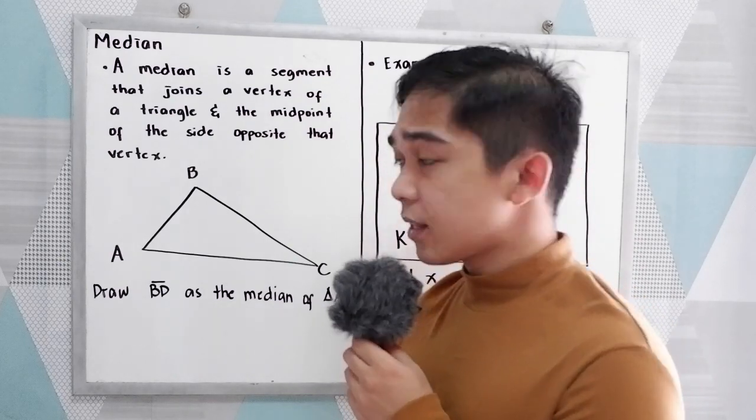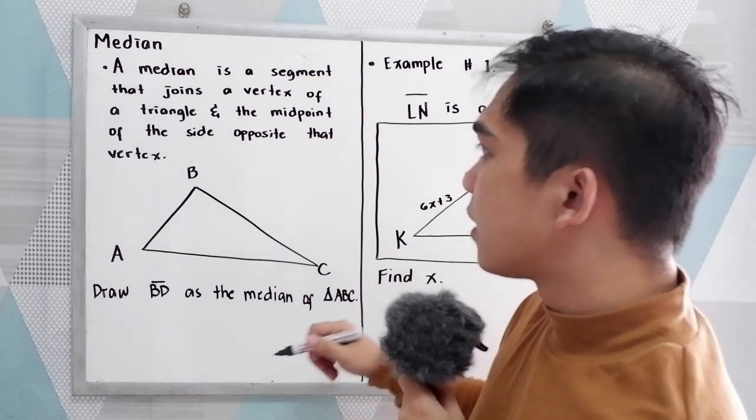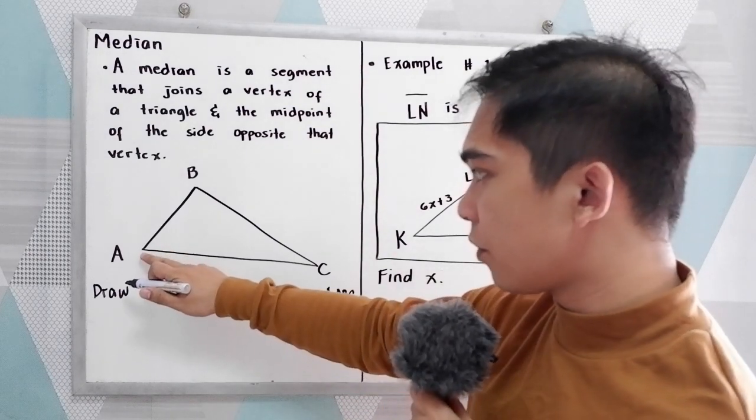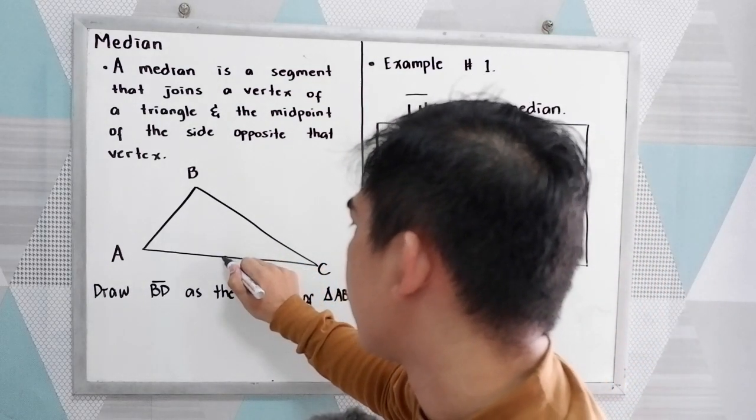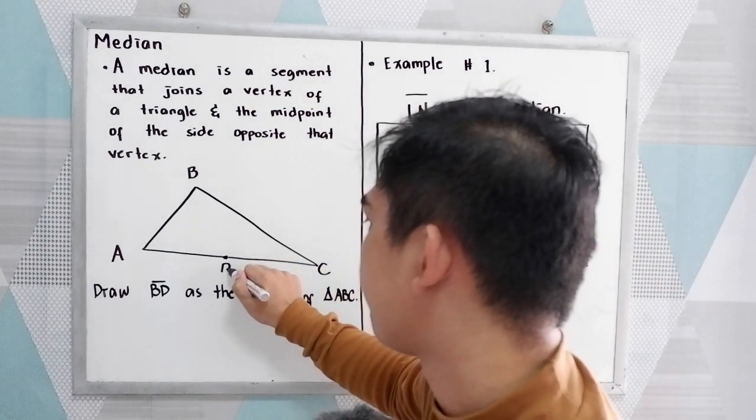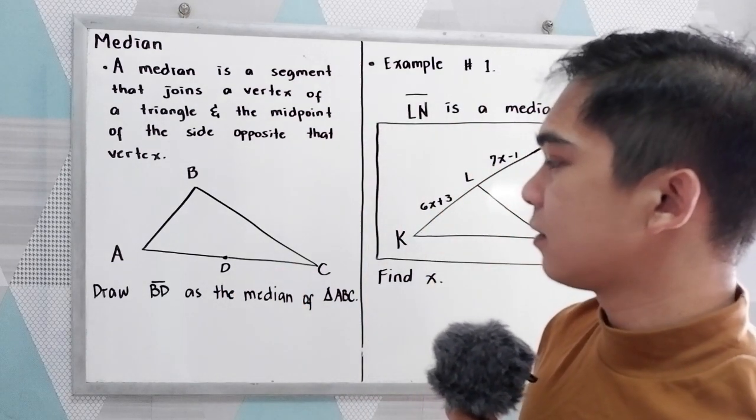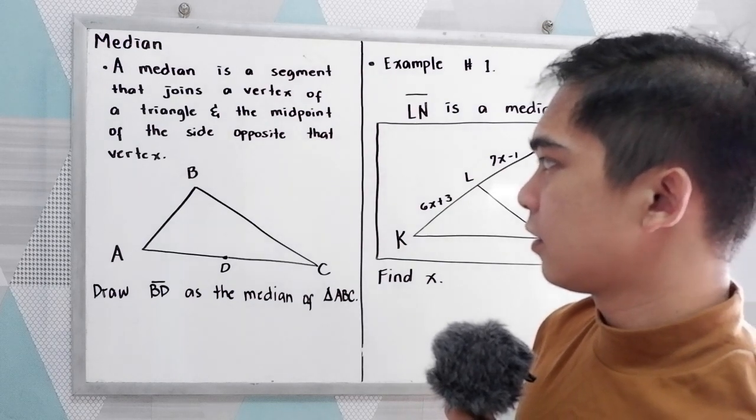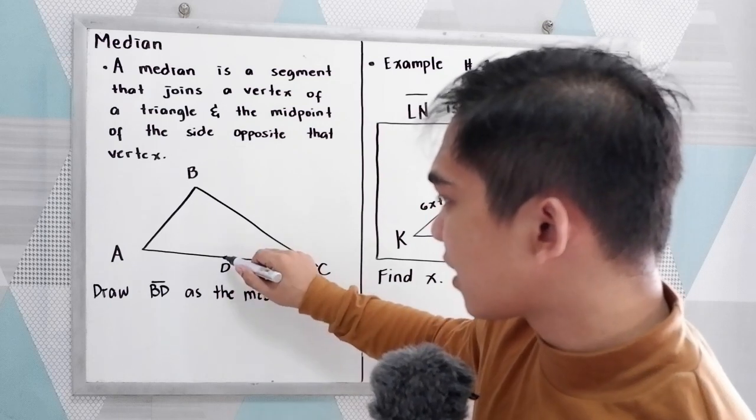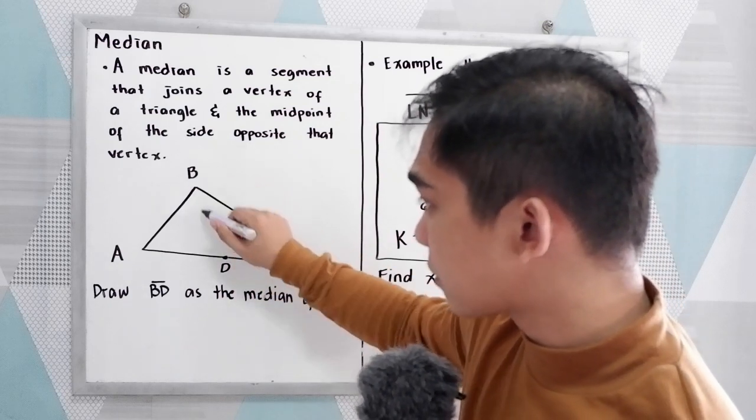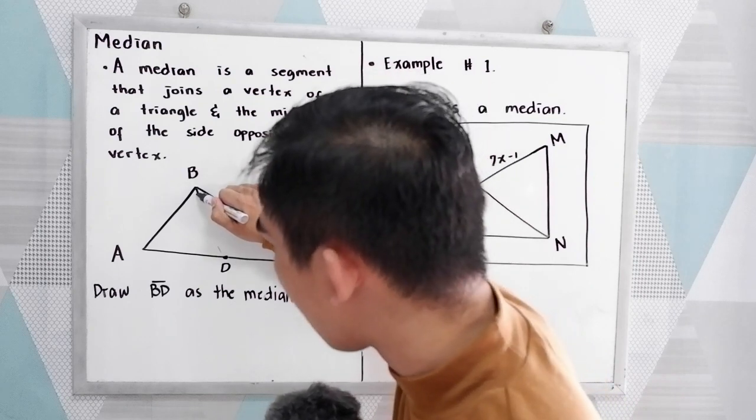Now to illustrate, let us use this triangle. So let's say the midpoint of segment AC is D. Now to get the median, the opposite of our midpoint is the vertex B.